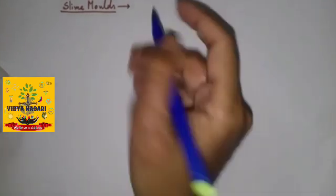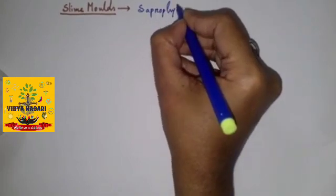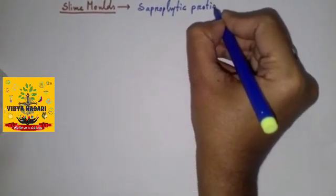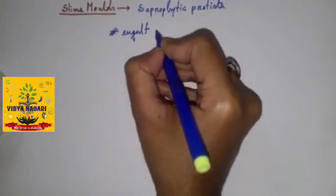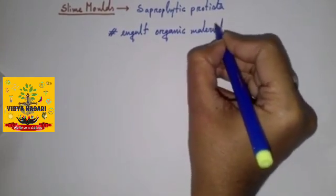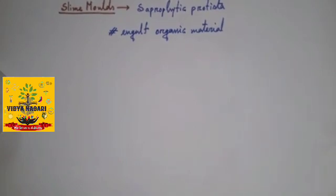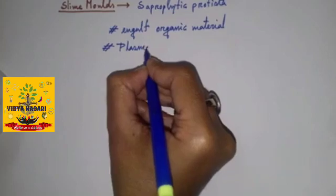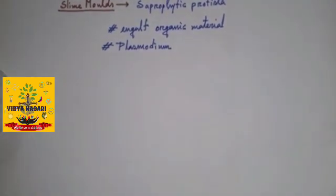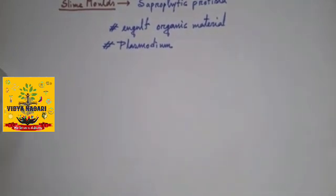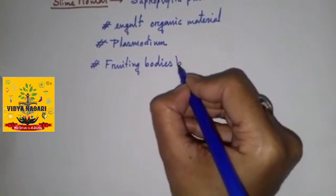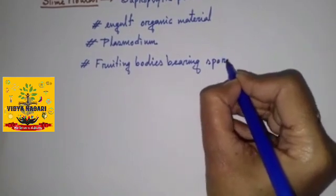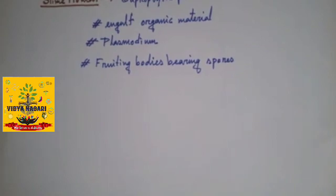Now another family is slime molds. Slime molds are saprophytic protists. Their body moves along decaying twigs and leaves and thus they engulf organic material. Under suitable condition they form an aggregation called plasmodium which may grow and spread over several feet. During unfavorable condition the plasmodium differentiates and forms fruiting bodies bearing spores at their tips. The spores possess two walls. They are extremely resistant and survive for many years even under adverse conditions. Spores spread by air currents.